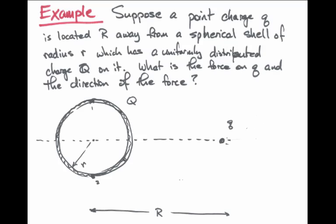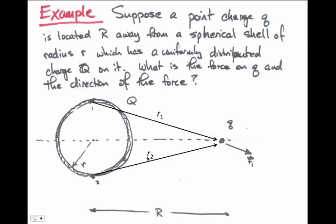It is helpful to consider the large charge capital Q as being divided into small elements, each located at different places around the ball. Consider a small element number 1 located near the top. It is a distance r1 away from little q, and exerts a force given by Coulomb's Law — the product of the two charges divided by the distance squared — in the direction of r1. Likewise, element number 2 at the bottom, directly opposite number 1, exerts a force given by Coulomb's Law along the vector r2, which points from that second charge toward little q, giving force f2 along direction r2.